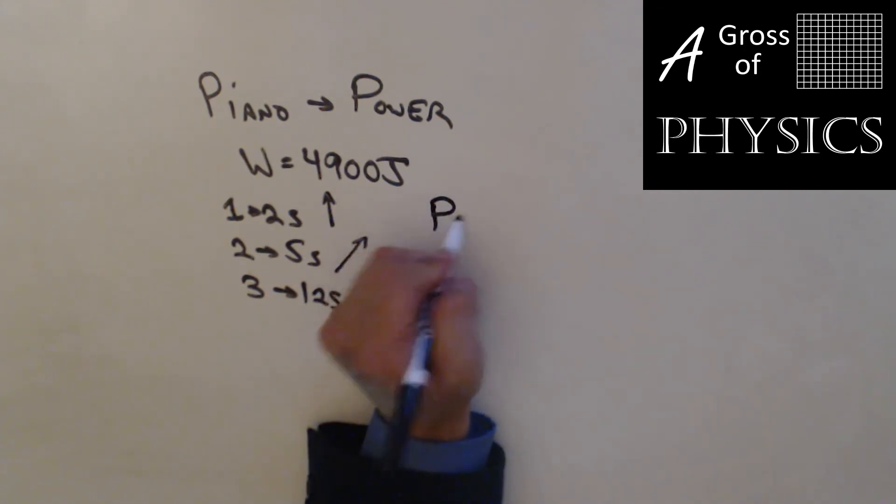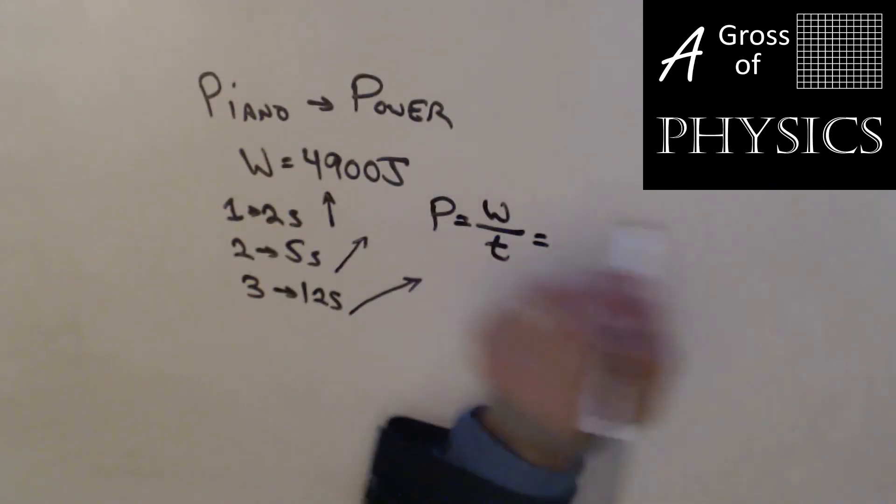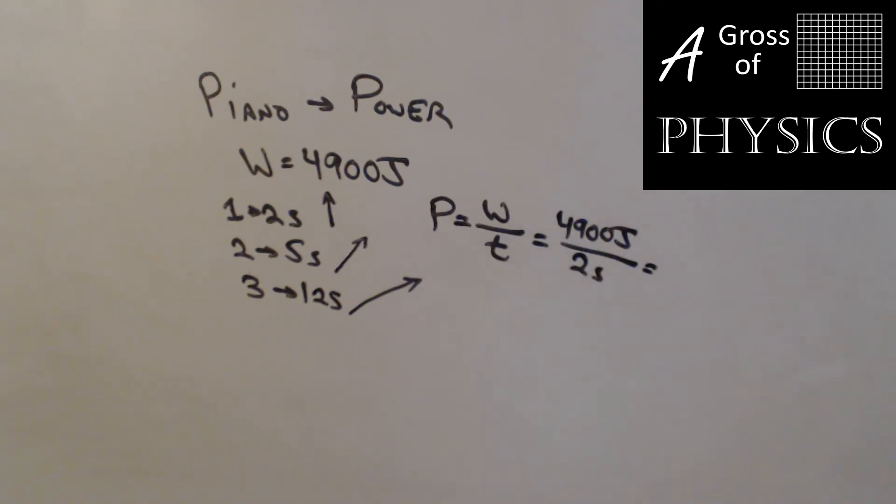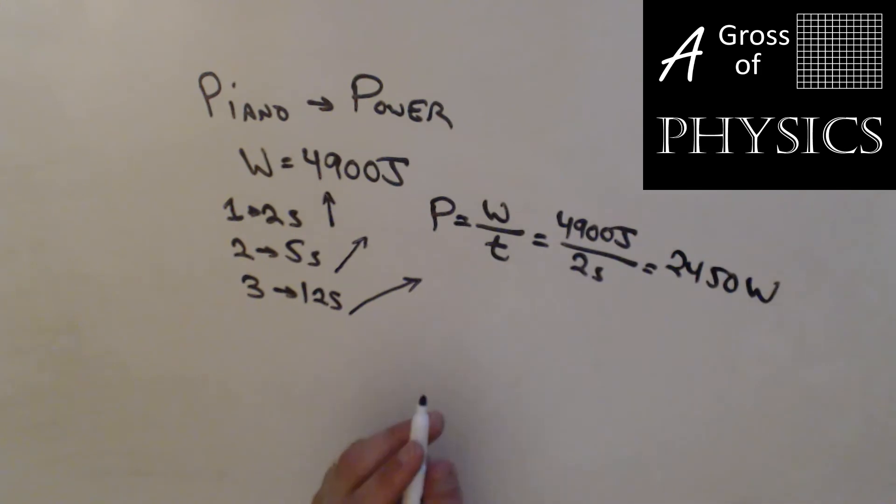Power is work over time. Power is 4900 joules over two seconds for the first one. If I do 4900 divided by two, I get 2450 watts, which is the unit for power.